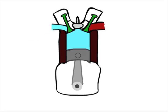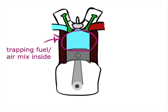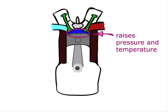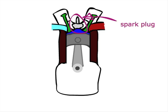The inlet valve then closes, trapping the fuel air mix inside. The piston moves upwards again, reducing the volume and increasing the pressure and temperature of the fuel air mixture. This is the spark plug, and at this point it sparks, igniting the mixture.